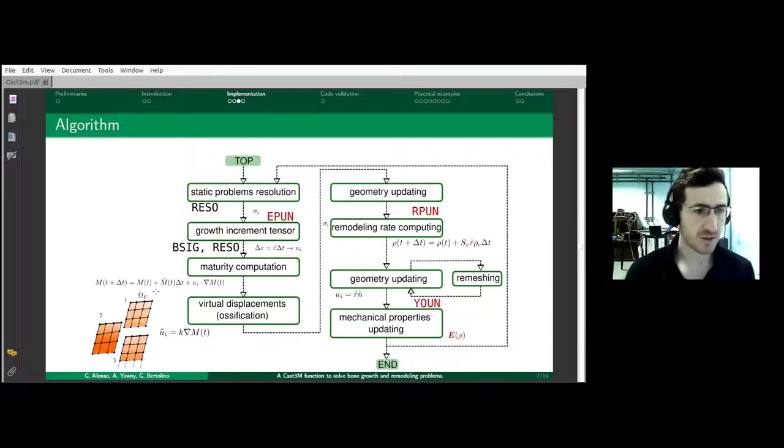The algorithm, the notion behind modeling growth is that nodes in the mesh follow the points in space having the same maturity they have when the simulation began. This way we can model the moving boundary problem. We can do remeshing with the algorithm to keep the mesh quality. When we don't have any growth happening, this algorithm reduces to the well-accepted and commonly used algorithm for remodeling problems.